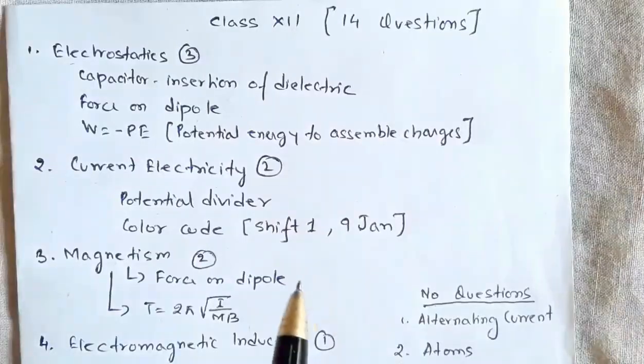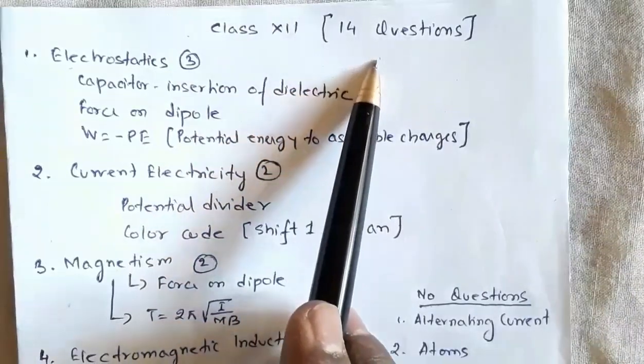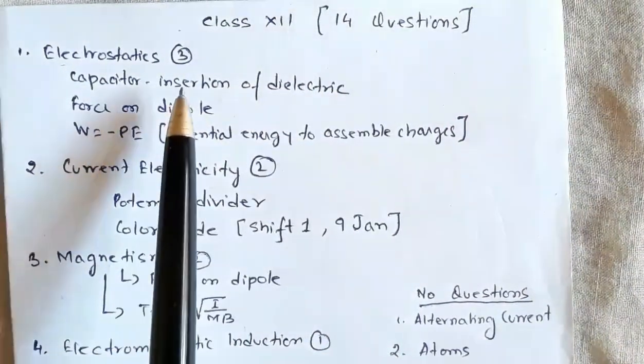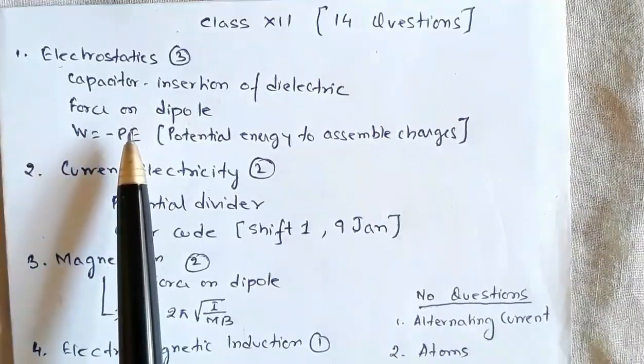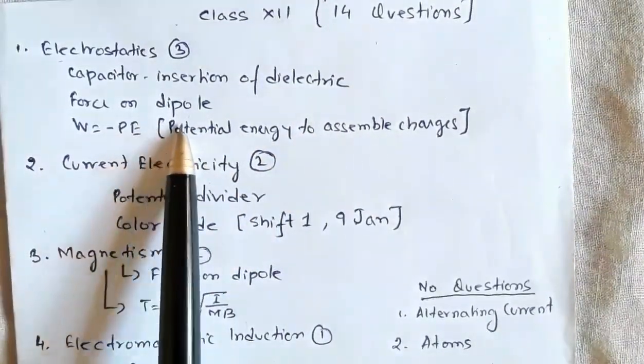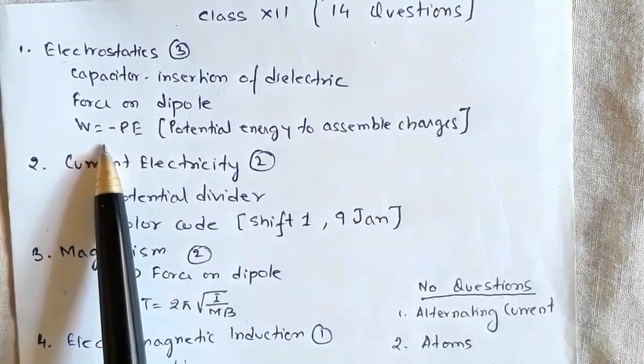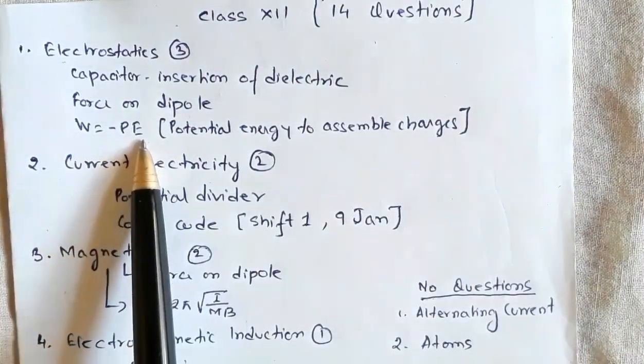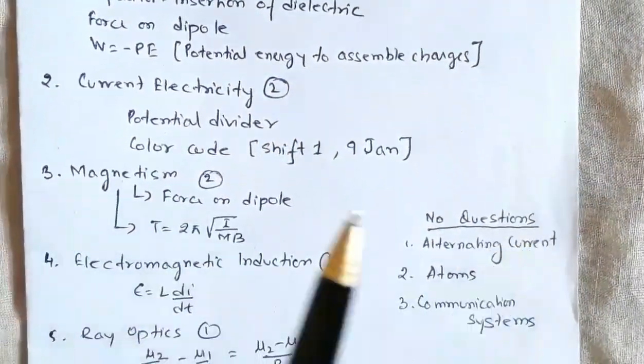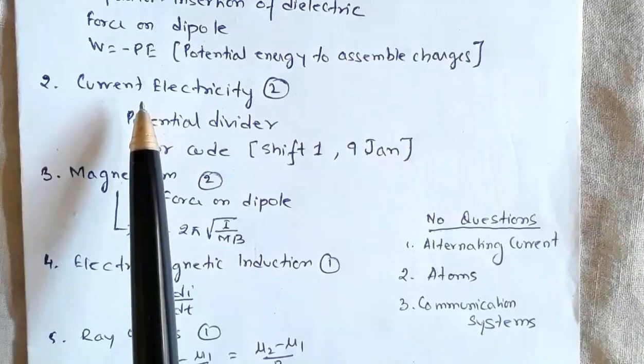Coming to class 12 topics, there were 14 questions out of the 27 questions. From electrostatics there were three questions: one from capacitor insertion of dielectric, then force on a dipole, then work done equals negative of potential energy, that is potential energy calculation to assemble charges.